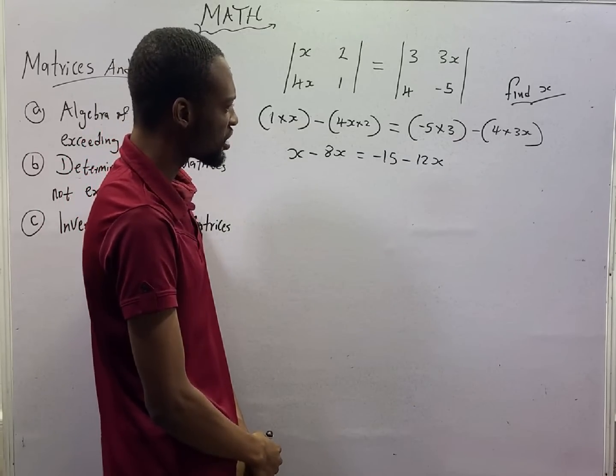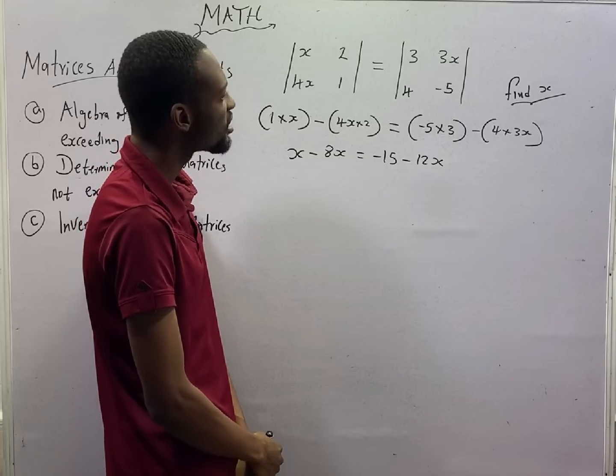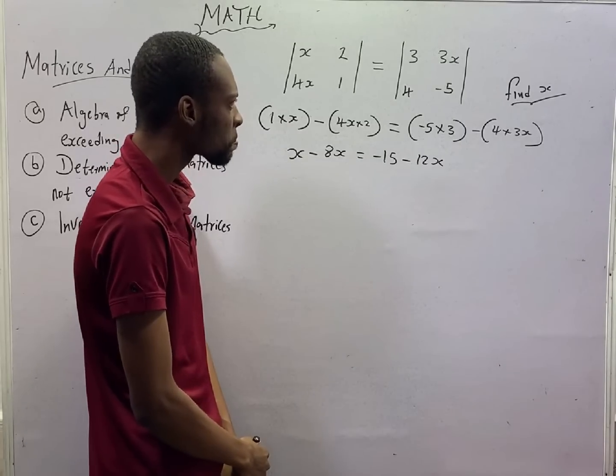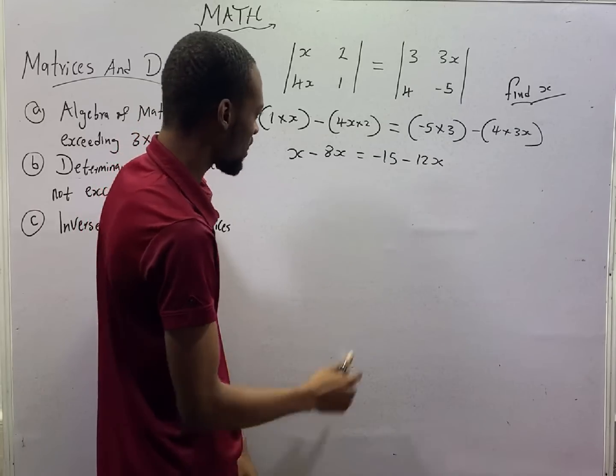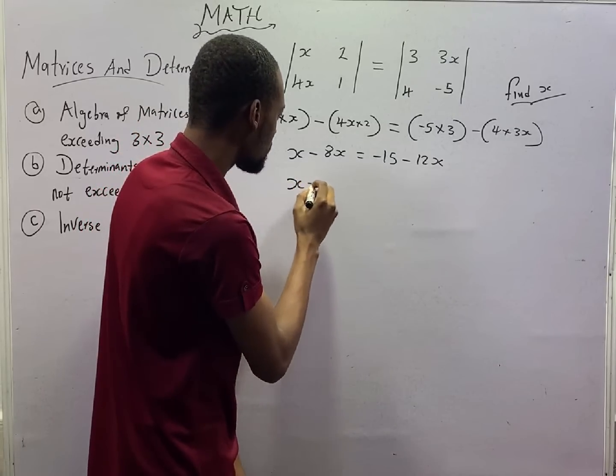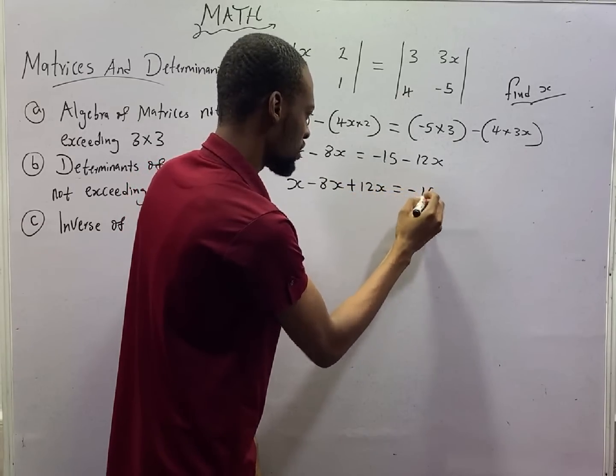If that makes sense to me and if that makes sense to you. Collecting like terms, we should have something like S minus 8S plus 12S is equal to minus 15.